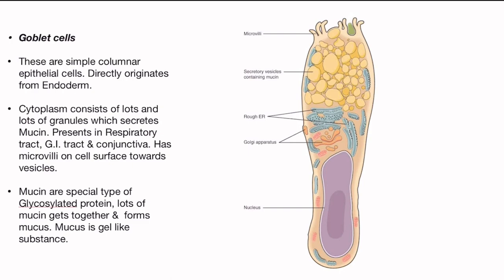Cytoplasm consists of lots and lots of granules which secrete mucin. The cells are present in respiratory tract, GI tract, and conjunctiva, and have microvilli on the cell surface towards vesicles, as you can see in this photo.